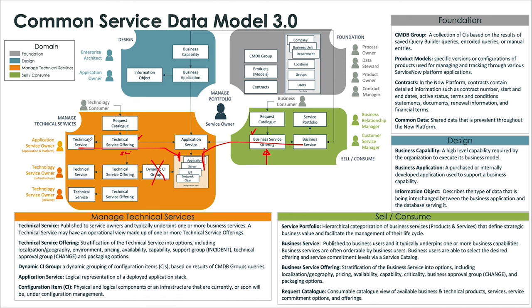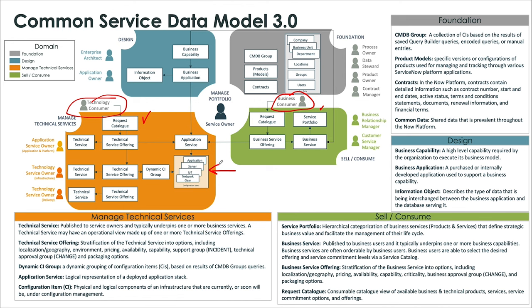At a minimum, what I would suggest, if you're establishing that technical and business service point of view first, is that you at least create a one-for-one. You create that technical service offering that matches each technical service, and likewise for business service. You'll notice the symmetry between this side on the left and the side on the right. When you're establishing technical services or business services, you have to think about the consumer. The nature of the deliverable is part of it, but the consumer is what drives what kind of service it is.